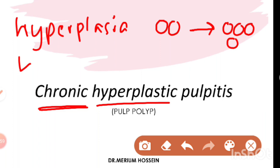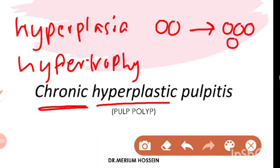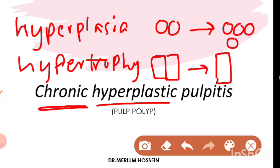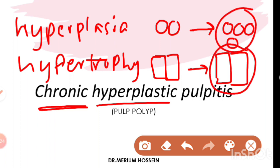In the case of hypertrophy, there is going to be an increase in the size of cells. For example, two cells of a certain size become two cells of a larger size after the hypertrophic change — note that the number of cells remains the same. But in both conditions there is an overall increase in the size of the tissue.